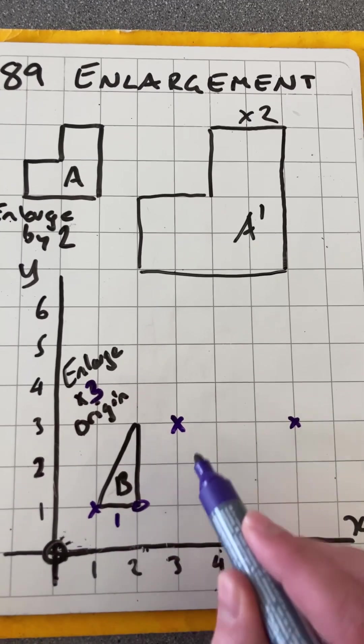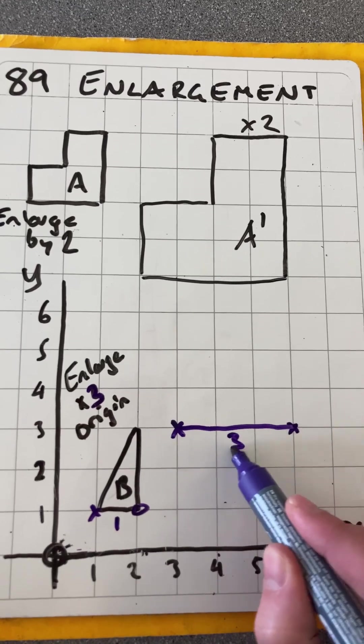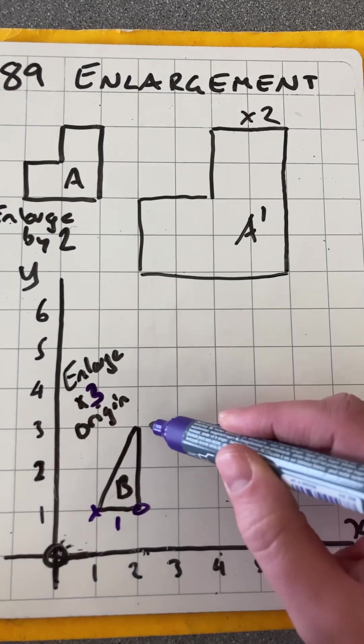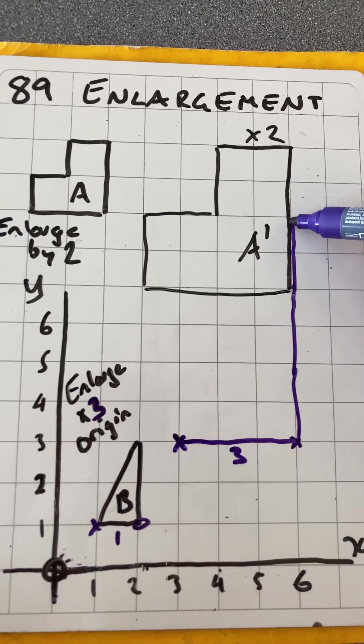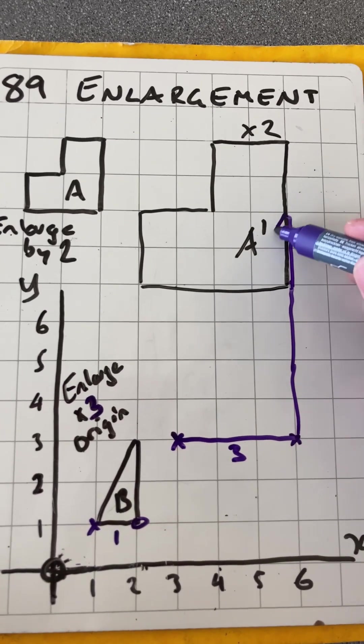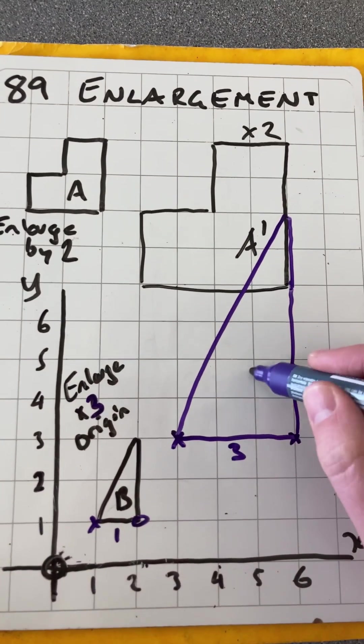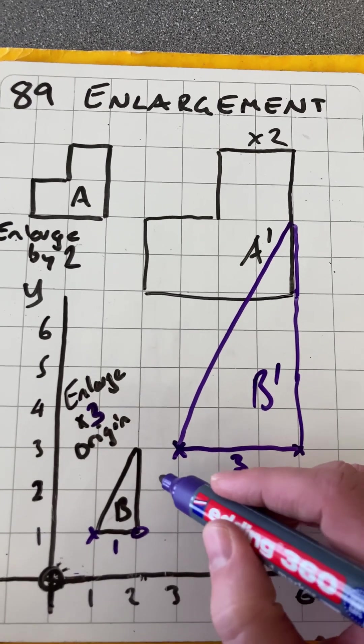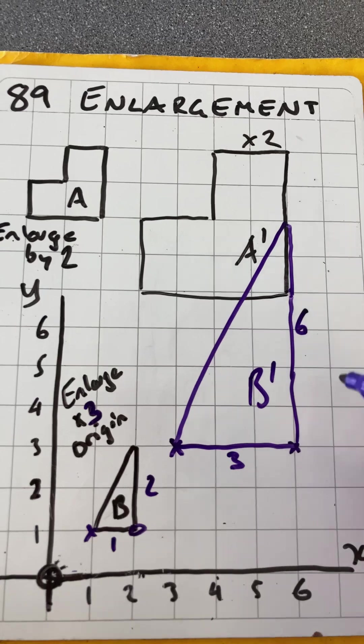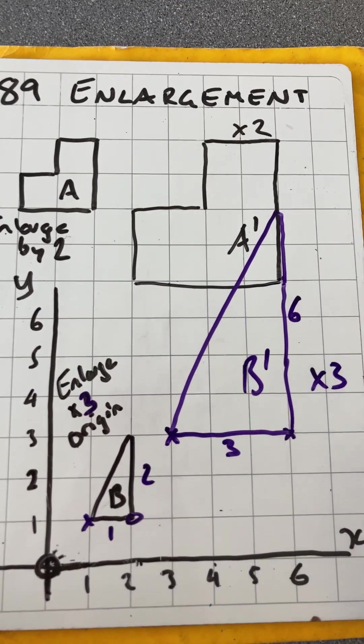You can see that length there was 1, this length there will now be 3. The back was 2, it'll now be 2, 4. And yes, it's going to overlap, at least the color's different. And then I'm going to draw a line down there, and that'll be the image of B. So each of those, that was 2, that's now 6. It's gone up by a scale factor of 3.